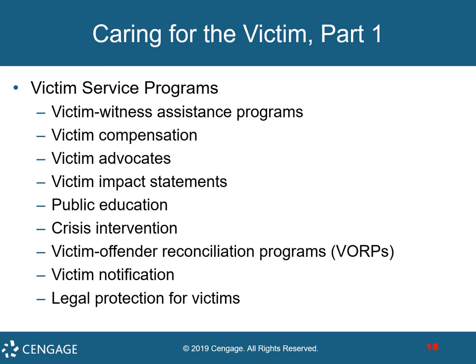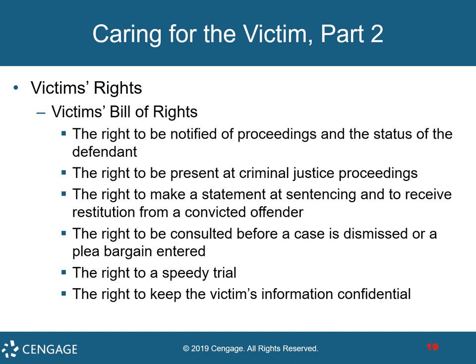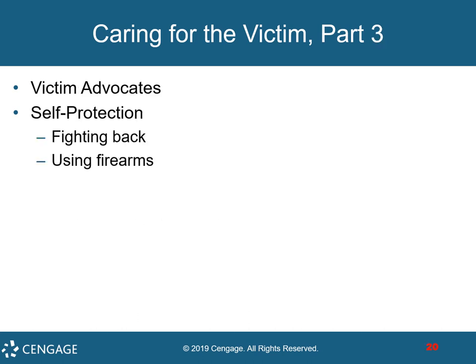There's legal protection for victims as well. Protective orders require accused abusers to immediately stop stalking or harassing a victim and to stay away from the victim's home. Victims have a Bill of Rights in every state, which includes the right to be notified of proceedings and the status of the defendant, to be present at criminal justice proceedings, to make a statement at sentencing and receive restitution from a convicted offender, to be consulted before a case is dismissed or a plea agreement entered, the right to a speedy trial — not just for the defendant but also for the victim — and to keep the victim's contact information confidential. There are also victim advocate groups who work for victims to help them with self-protection, including use of firearms, and help in fighting back in general.